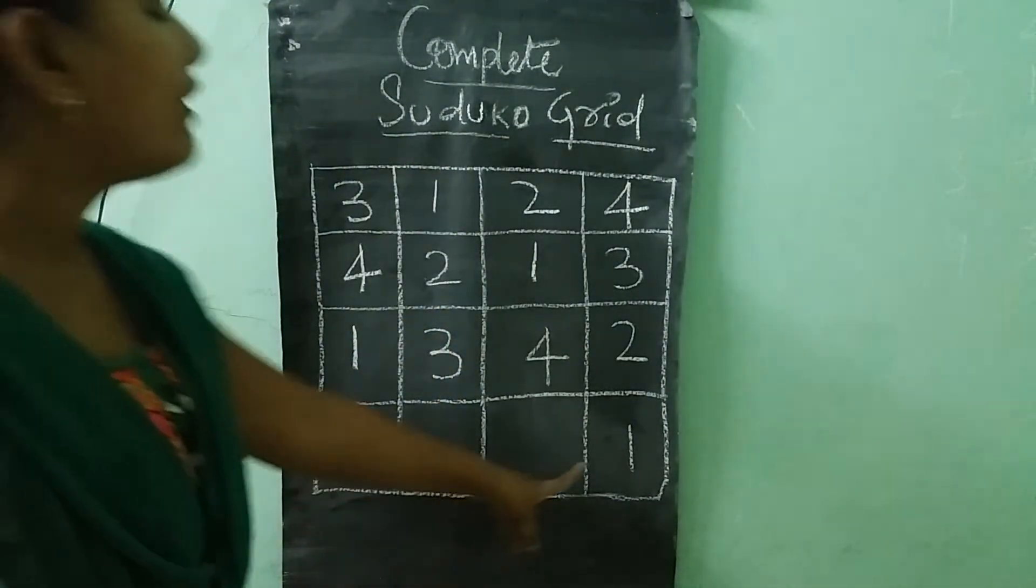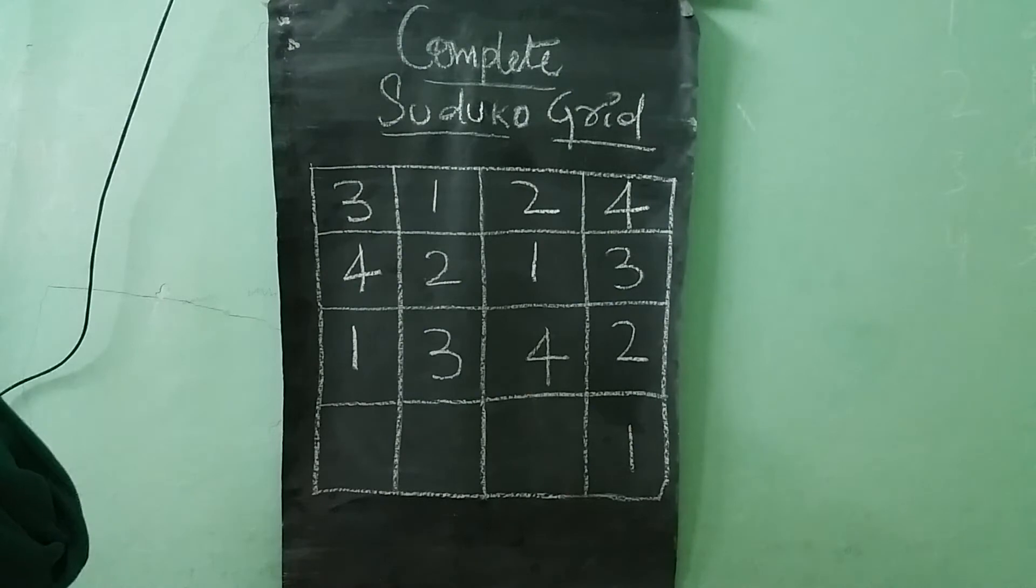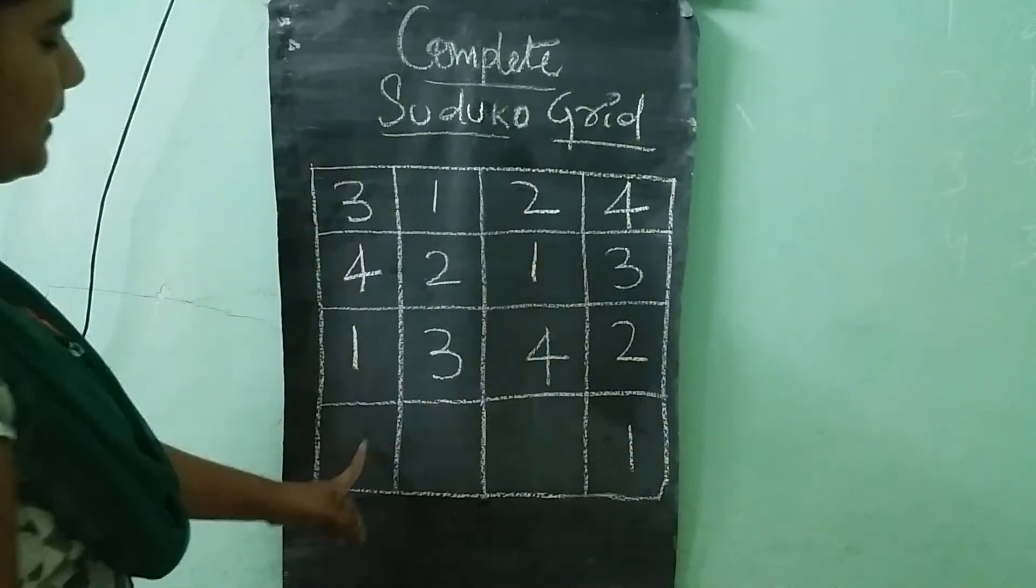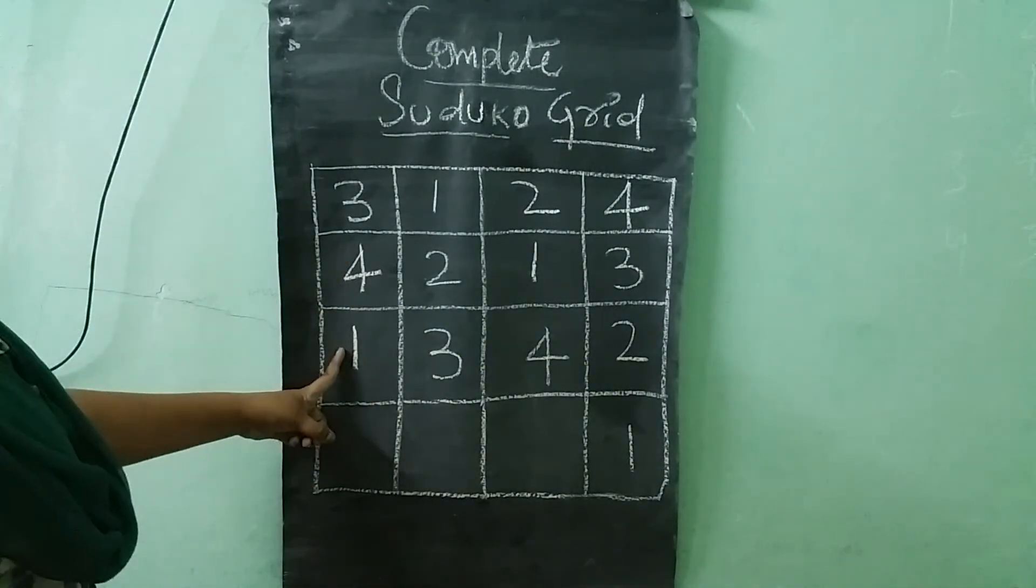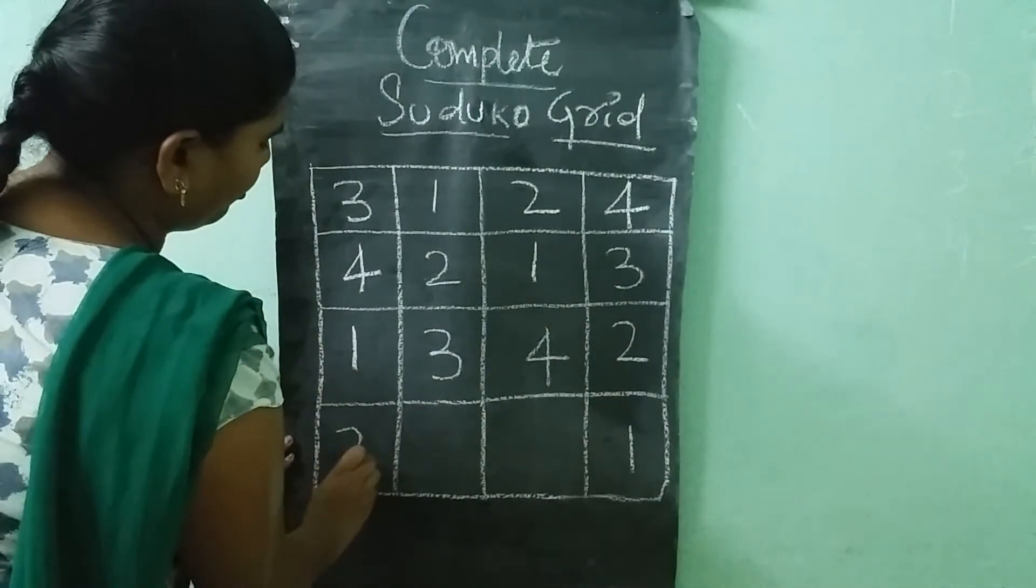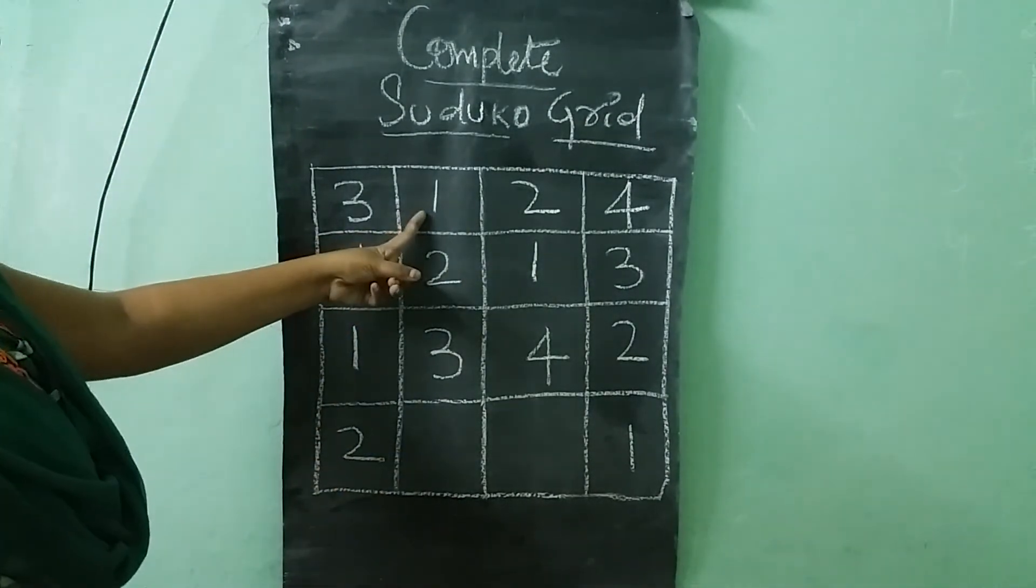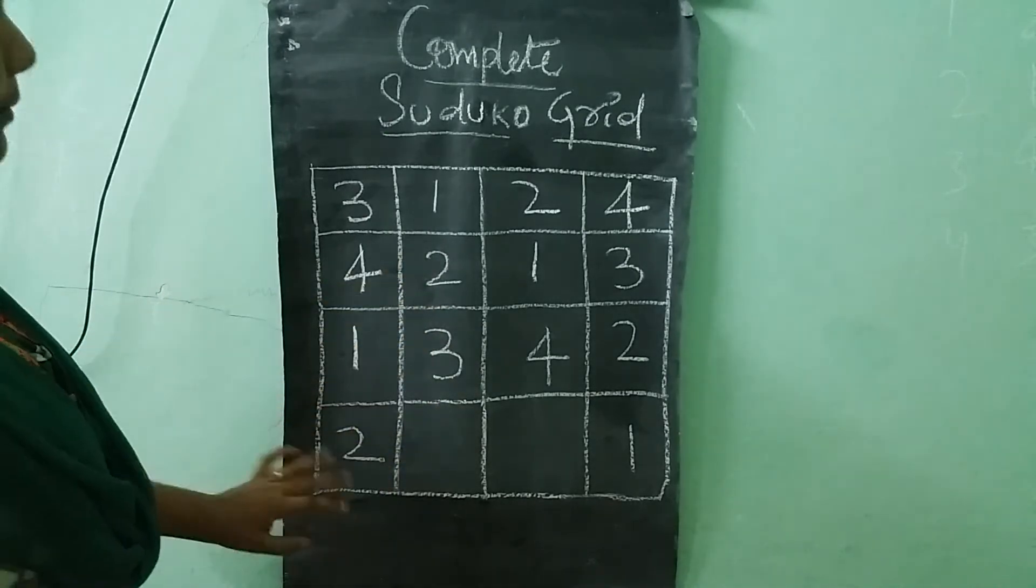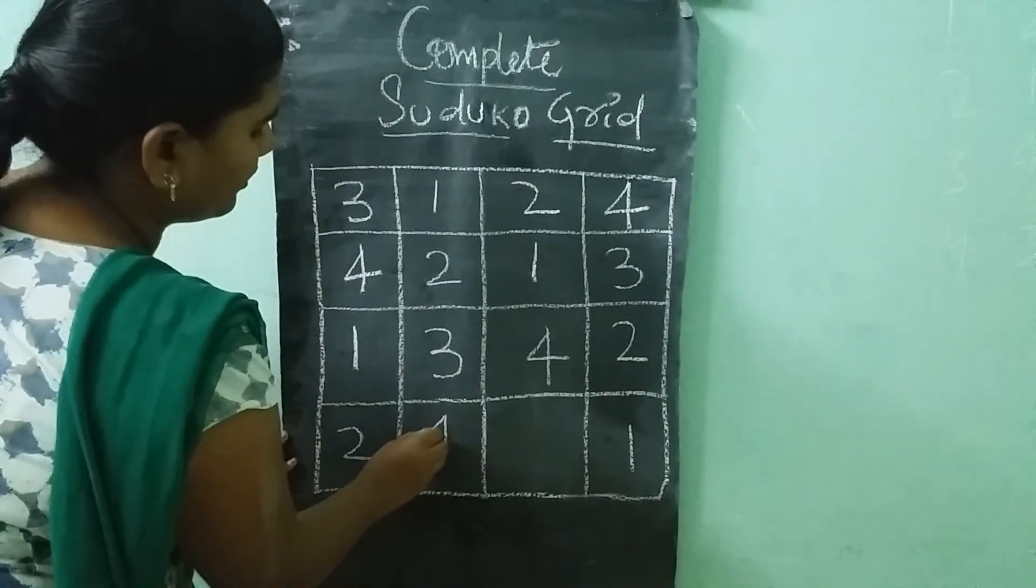In last row we have 1 number. So we need to write 2, 3 and 4. So where we need to write 2 numbers? First check the first column. 3, 4, 1 is there. Right? So 2 is remaining. So we need to write 2 here. Next. 1, 2, 3. 3 numbers is there. So what is remaining? 4 is left. So we need to write 4 here.